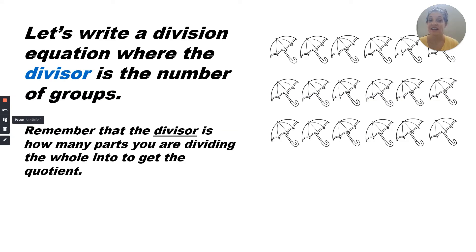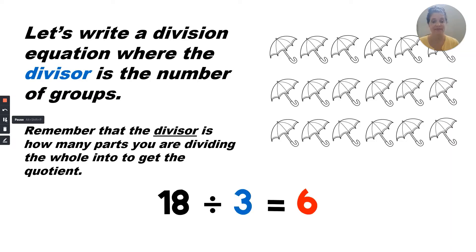Now let's write a division equation where the divisor is the number of groups. Remember, in a division equation you start with the dividend — that's the biggest number — and you're dividing it into the number of groups. That's the divisor. The divisor is how many parts you are dividing the whole into to get the quotient. The quotient is the answer. The dividend, or the large number, is 18 — there are 18 umbrellas in all — and we're dividing them into three groups, or three rows. So 18 divided by three equals six, which is how many are in each group.